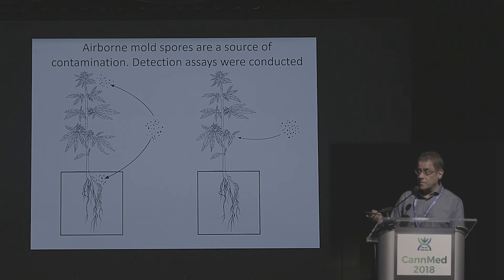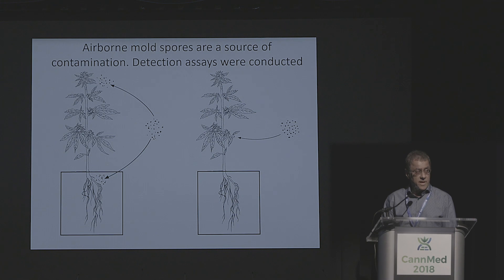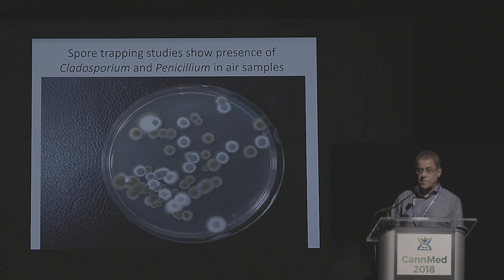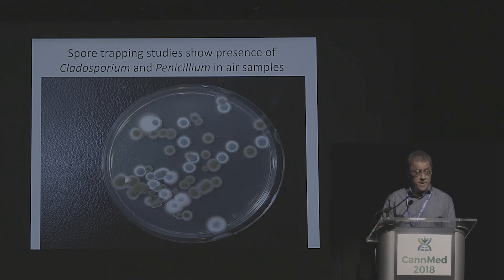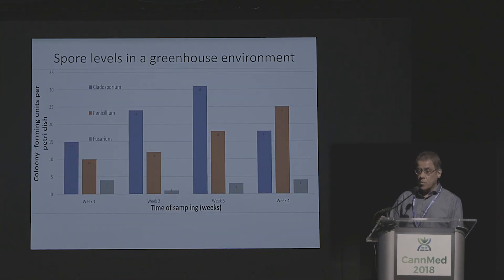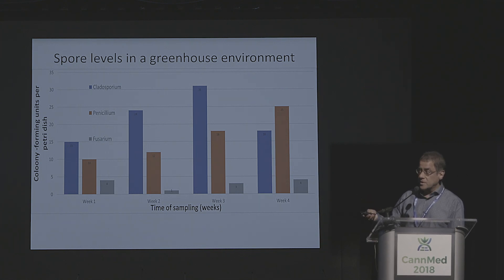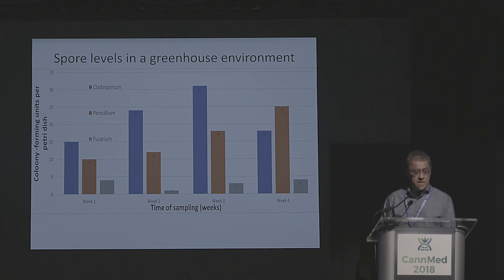Airborne contamination can be a problem. Spores in the air may land on flowers or roots and colonize those tissues, potentially resulting in contamination of product. We devised a simple system to sample air: we take a petri dish with agar, put it in the greenhouse for 60 minutes, and bring it back. What we see are colonies of Cladosporium and Penicillium in the air. As the weeks of flowering progress, Cladosporium levels start to go up, and as the plant grows, Penicillium levels start to go up — as you accumulate plant matter, these molds propagate and increase in the environment.